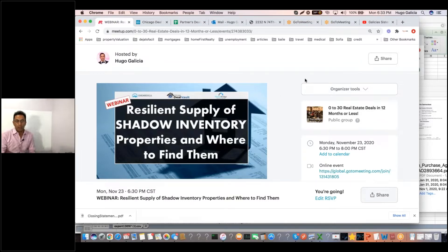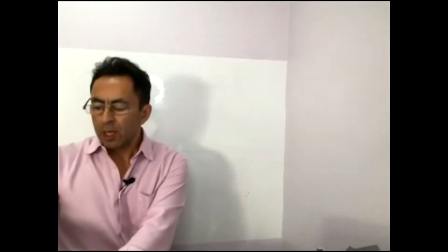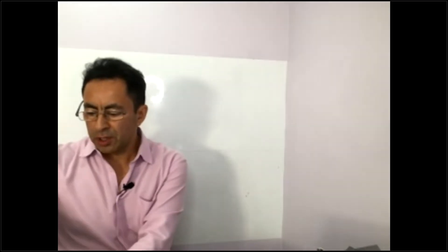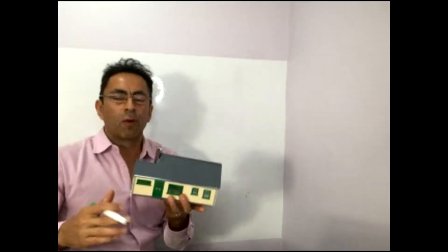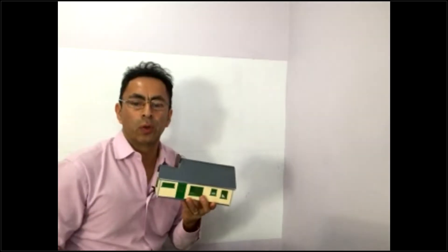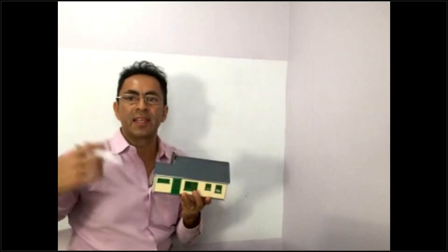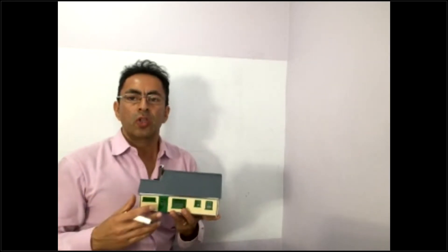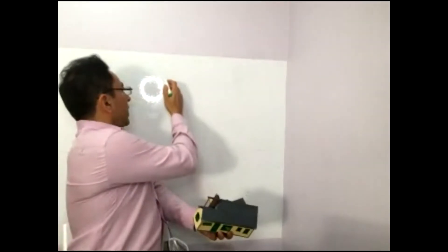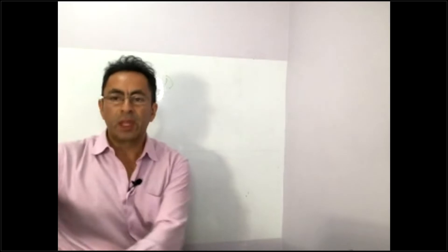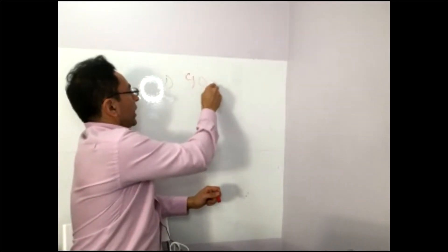Shadow inventory — what do we mean by that? In the foreclosure process, somebody bought a property, got a loan, but wasn't able to pay the mortgage. After 90 days, the bank will take the owner through the foreclosure process. Stage number one: the owner gets the notice of default, which happens after about 90 days.